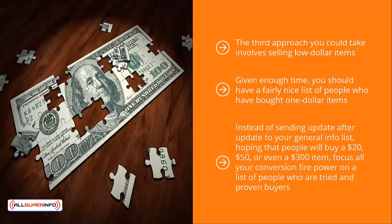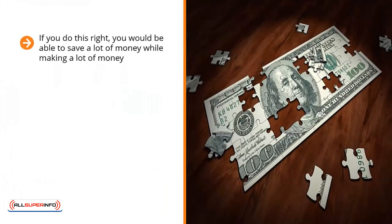Instead of sending update after update to your general info list hoping that people will buy a $20, $50, or even a $300 item, focus all your conversion firepower on a list of people who are tried and proven buyers. This saves you a lot of time and effort. You should still send updates to your general information list; however, space these apart and focus on value, and advertise only lower-dollar items. If you do this right, you would be able to save a lot of money while making a lot of money.